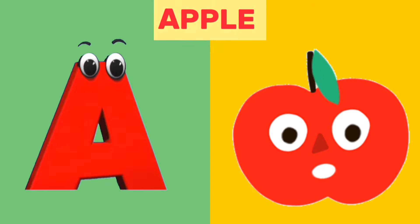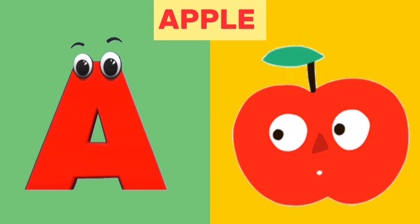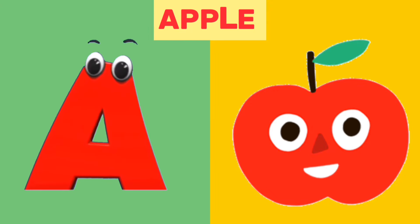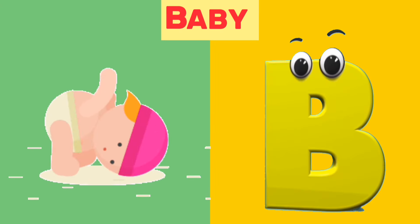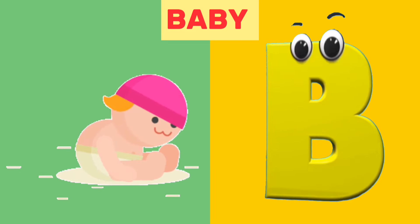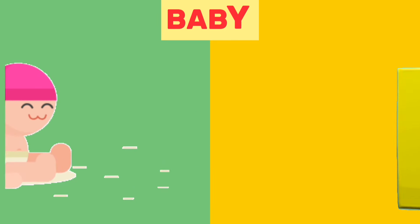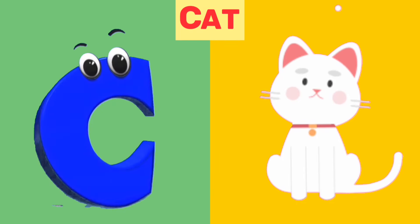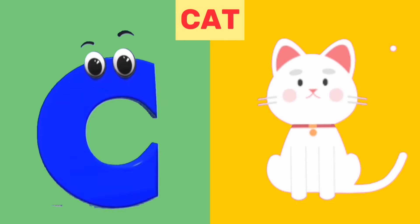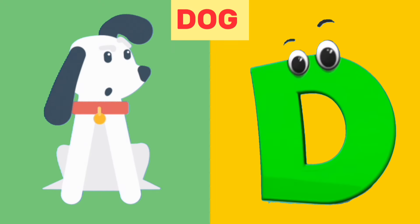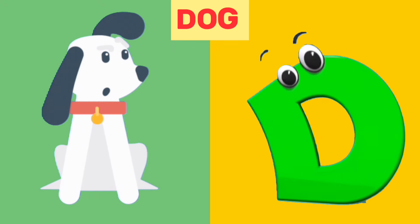A is for apple, a, apple. B is for baby, b, baby. C is for cat, c, cat. D is for dog, d, dog.